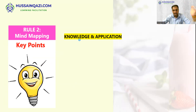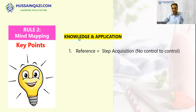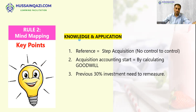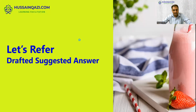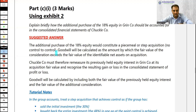For mind mapping, the knowledge and application required: number one, reference step acquisition — no control to control. Put the knowledge about step acquisition. Number two, acquisition accounting starts by calculating goodwill — you must mention this. You also need to write that the previous 30% investment needs to be remeasured. That covers the two marks.